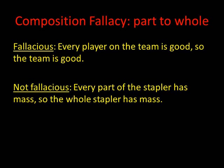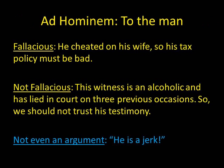However, the following argument is not a composition fallacy even though it moves from the parts to the whole as well. This argument says each part of the stapler has mass, so the whole stapler has mass. That's not fallacious. So the content matters — you must look at the particulars of each situation. You cannot tell by the form alone, the form in this case being part to whole, whether it's fallacious. You have to look at the content, and that's why they're called informal fallacies.